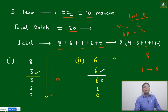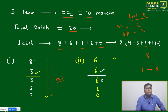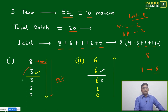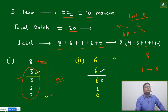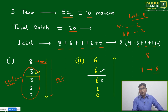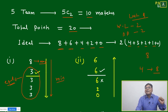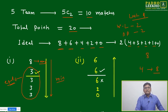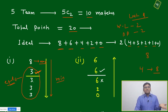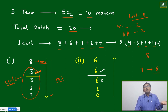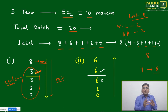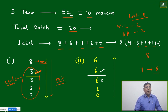To find the minimum points to qualify, give the top team maximum points. Top team gets maximum eight points. Remaining 12 points are distributed equally among the four remaining teams — three points each. Now, one of these four teams with three points will qualify for the semi-final based on run rate or some other criteria. All four teams have equal points, so any one qualifies. Therefore, the minimum points to qualify for the semi-final is three.